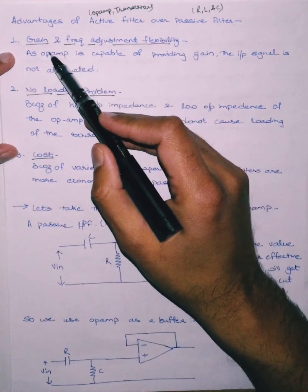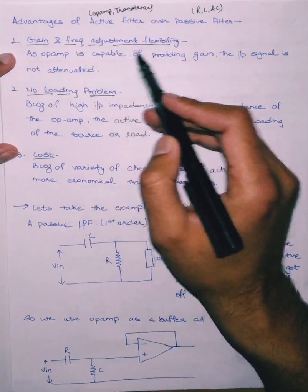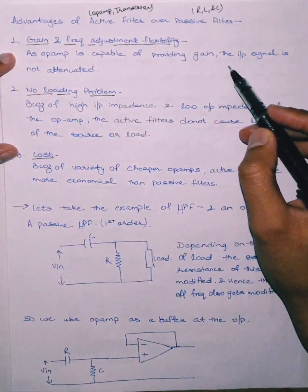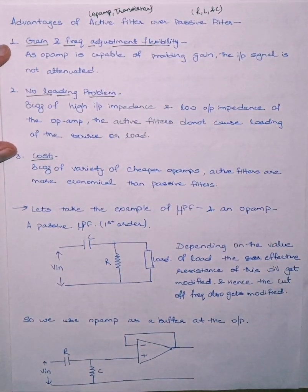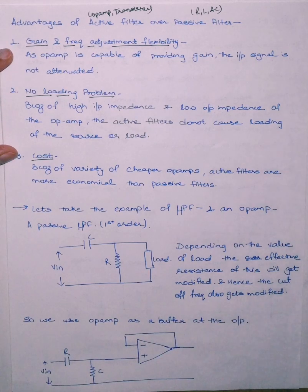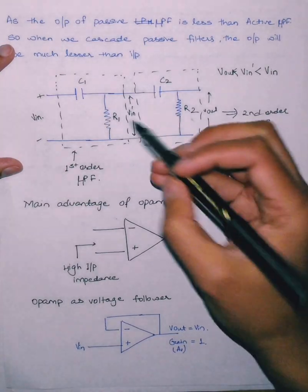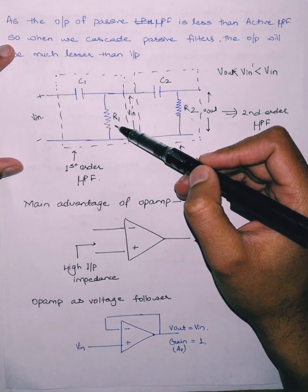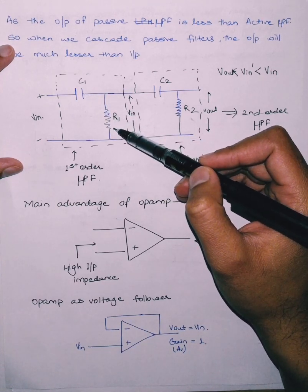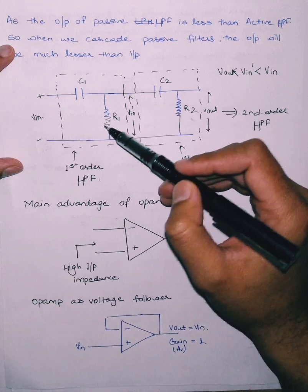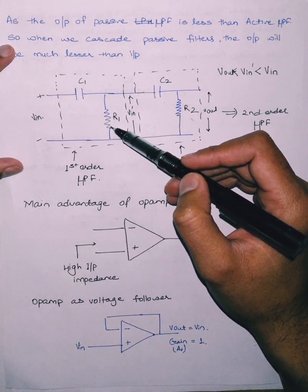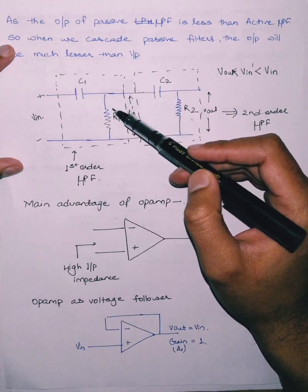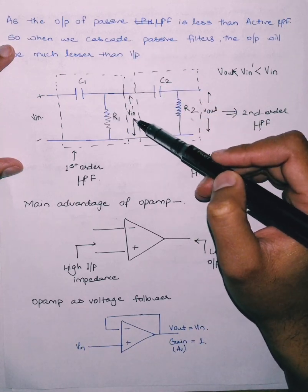The first advantage is gain and frequency adjustment flexibility. As the op-amp is capable of providing gain, the input signal is not attenuated. For example, consider a high pass filter which is a combination of capacitor and inductor — a passive high pass filter. Since there is no gain component or active component present in it, whatever input is applied will be attenuated at the output.